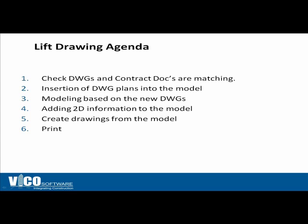We will then want to insert this DWG-type information into Constructor so we can then model on top of it. These DWG files represent a sheet of paper in the contract docs. We just slip sheet that DWG information into Constructor so we can trace on top of it and turn that 2D information into a three-dimensional model. The most useful step in all of this is to add the annotation — keynotes, callouts, dimensions — and we add this information to the model to help further explain the construction of the building to the field crews.